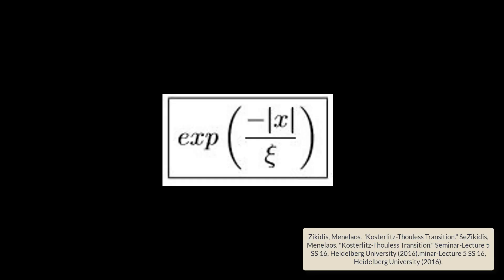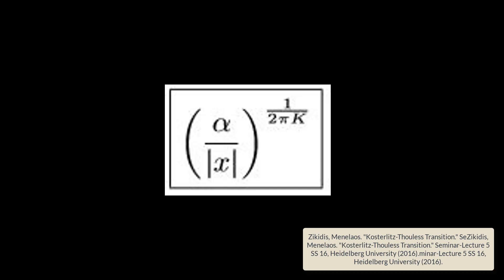For temperatures above T_KT, the correlation function goes as a decaying exponential. X is the distance between lattice sites, and ξ is the correlation length. For temperatures below T_KT, the correlation function is a power law.